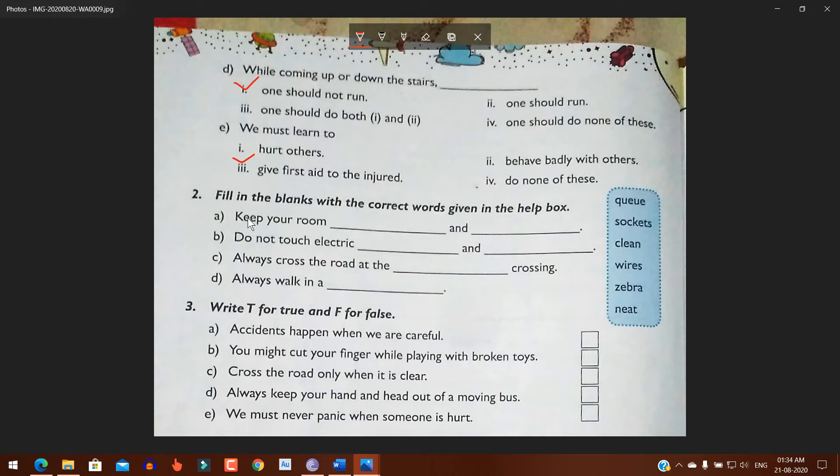Number two: Fill in the blanks with the correct words given in the help box. Number A: Keep your room dash and dash. Keep your room neat and clean. Number B: Do not touch electric wires and sockets.